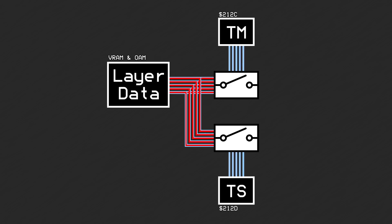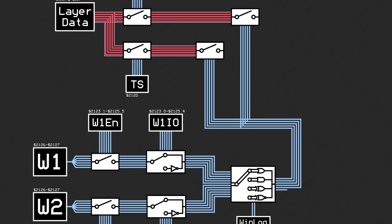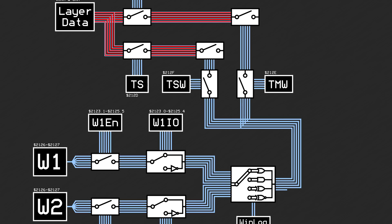Next, all of the lines pass through a second set of switches, all controlled via the window data we covered earlier. This means that if a pixel was determined to be inside the window, the layer will effectively be disabled and treated as transparent. These lines are actually put through a switch themselves, controlled by the through main window and through sub window registers at 0x212e and 0x212f. This acts as a more abstract enable switch for the window, since it controls both windows at once after they are merged. In order for a layer to be affected by a window, it must be set in both the window enable registers and the through window registers.